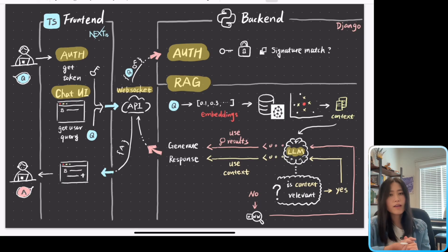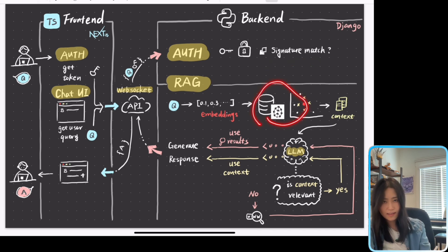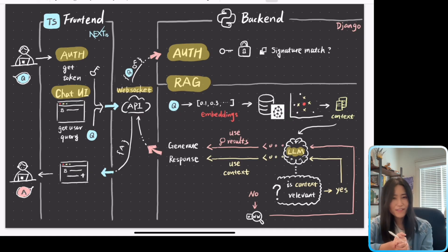So in summary, what our frontend does is going to get the user token and pass the user query and token to backend through the WebSocket API. And the core functionality of our backend is for user authentication and to get the context from Pinecone as well as the LLM orchestration layer. So here's what confuses me.